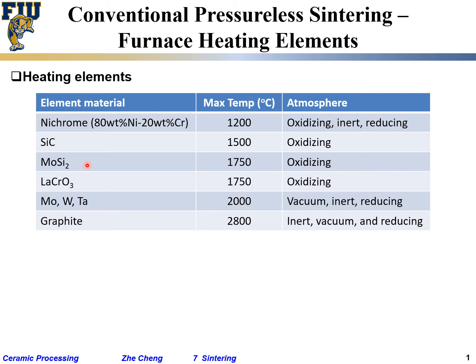Is MoSi2 a metal or ceramic? It is a ceramic, because it contains one metal (molybdenum) but silicon is not normally considered a metal — pure silicon is not conductive and not ductile. So we classify MoSi2 as a ceramic since it contains at least one non-metal element and is not a polymer. This material can last up to roughly 1750–1800°C, which is slightly better than silicon carbide, and it can be used in air.